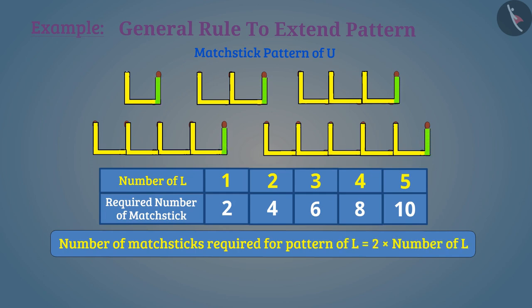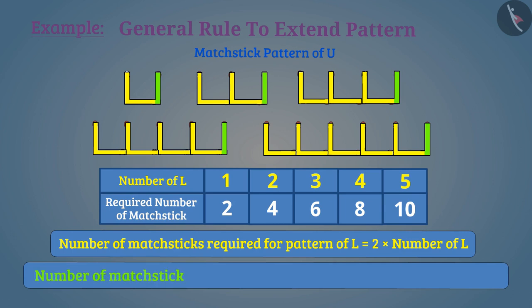Now if you include the last remaining matchstick in this pattern, then we get the pattern of U. This means that number of matchsticks required for pattern of U is equal to two multiplied by number of L plus one.